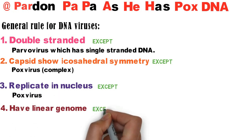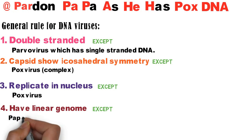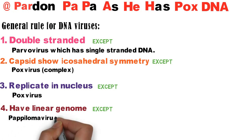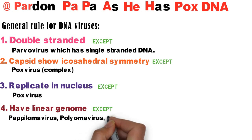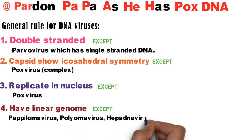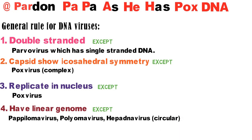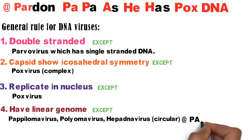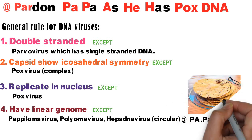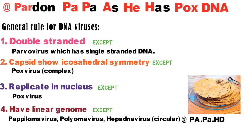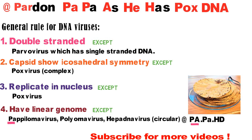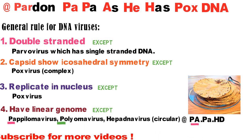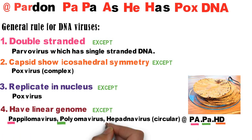Papilloma virus and hepadna virus have a circular genome, unlike other DNA viruses. To remember DNA viruses with circular genome, we can use the mnemonic PAHFORD — PAHFORD is a snack from the Indian subcontinent which is circular. 'PA' is for papilloma, 'H' is for polyoma, and 'HD' is for hepadna virus.